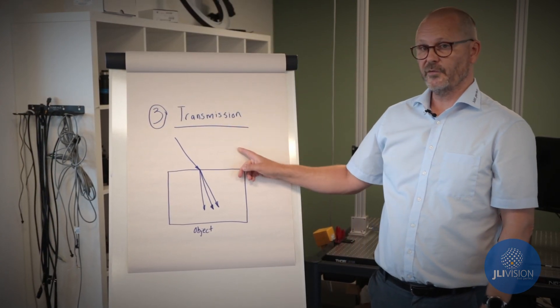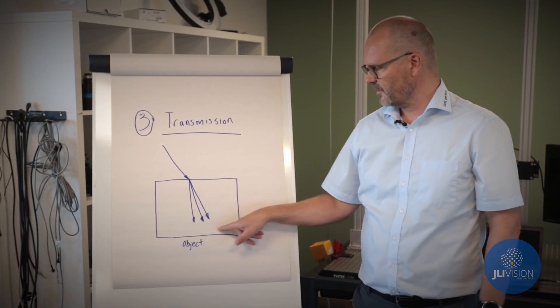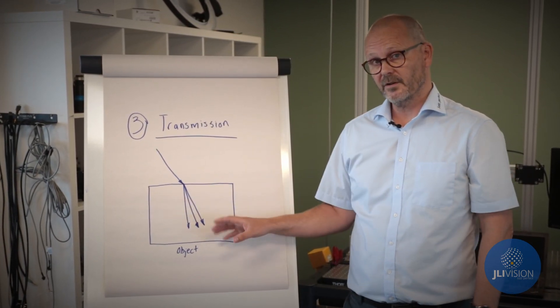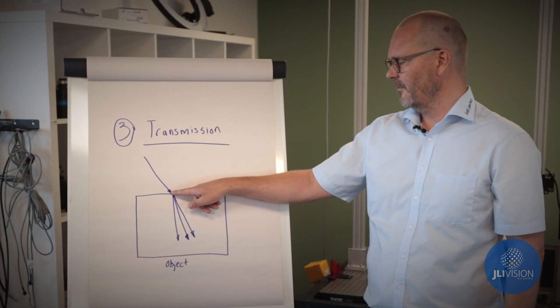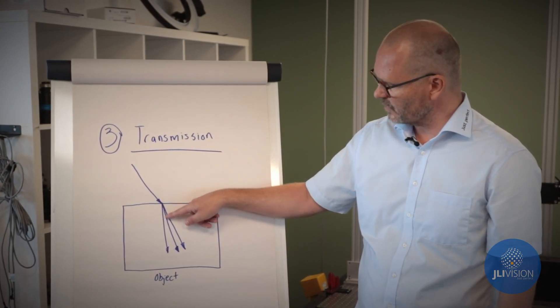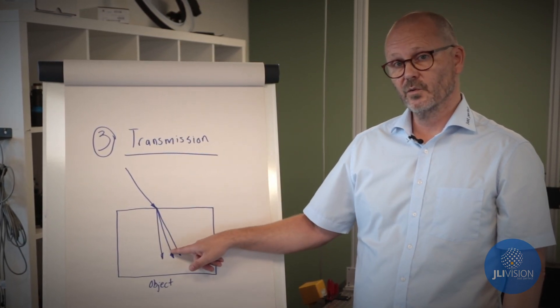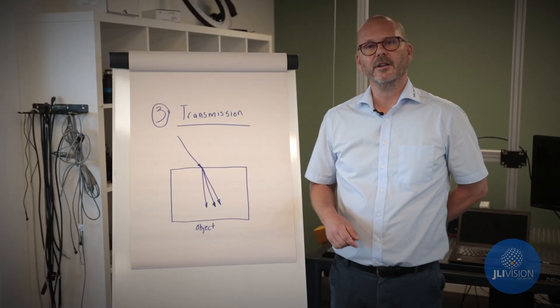And number three is what we call transmission, meaning that the object is transparent in some way. Light coming in which will actually both in some cases reflect on the surface, but most of it will actually pass through the transparent object in any given direction.